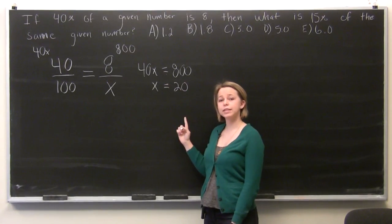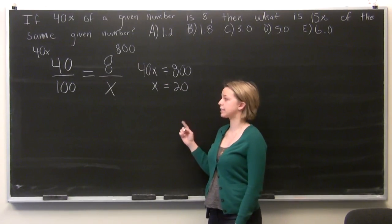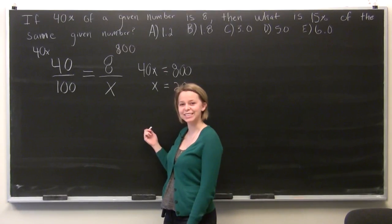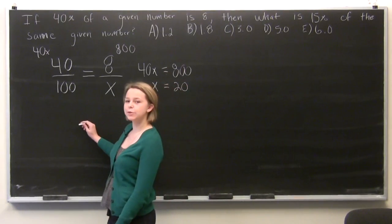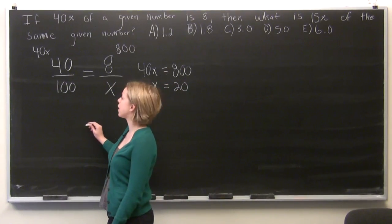So we know we're halfway done. We know that our given number x is 20. And so to solve the remainder of the problem, we'll set up another cross multiplication.